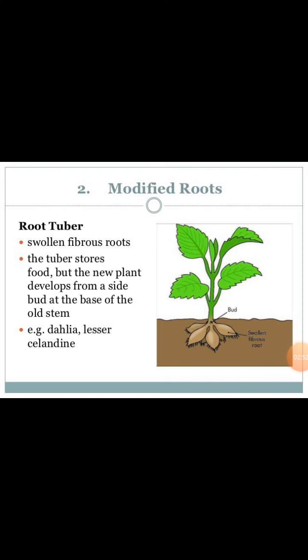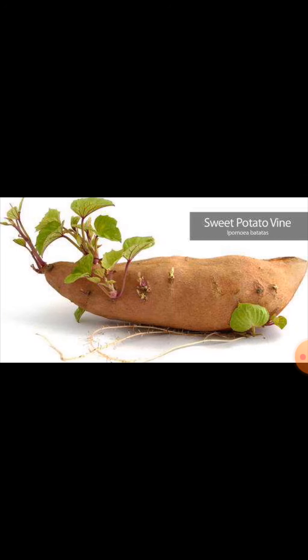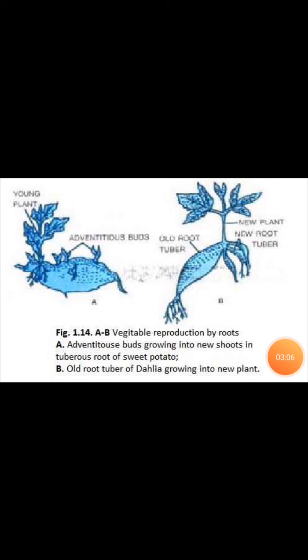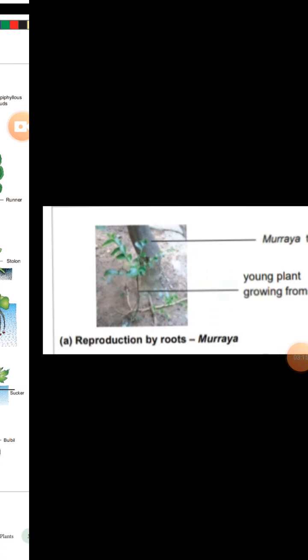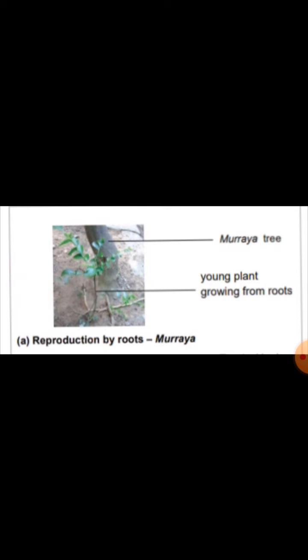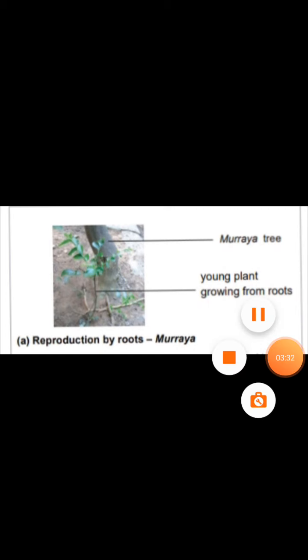Root tubers develop into new plants — sweet potato is one example. Adventitious buds develop into new plants as well. In our book, one of the examples given for reproduction by root is Moraya. The young plant develops into a new plant. This role of asexual reproduction is especially found in vegetative propagation by the natural method through roots.